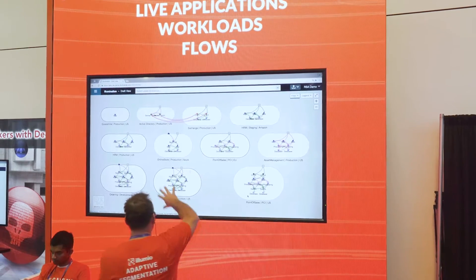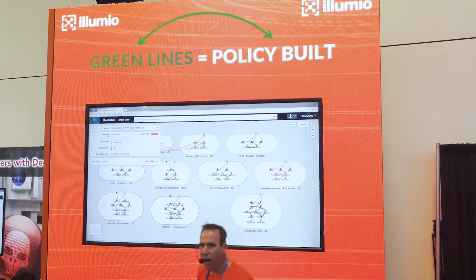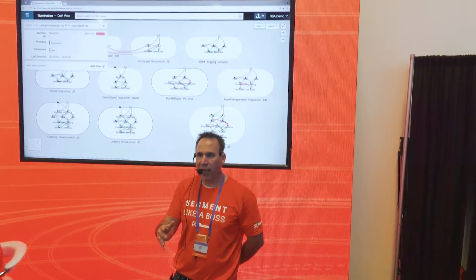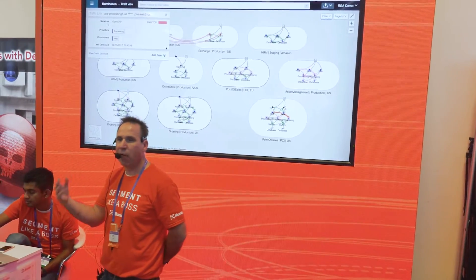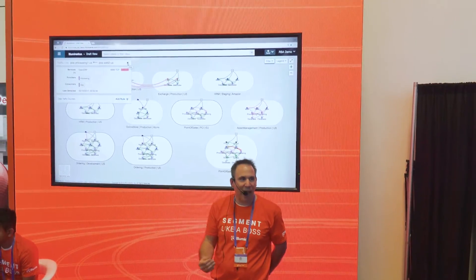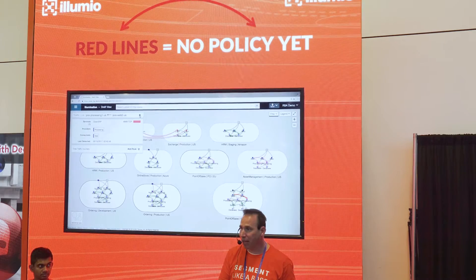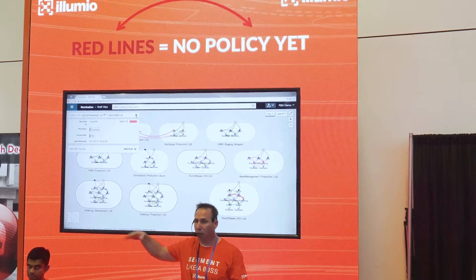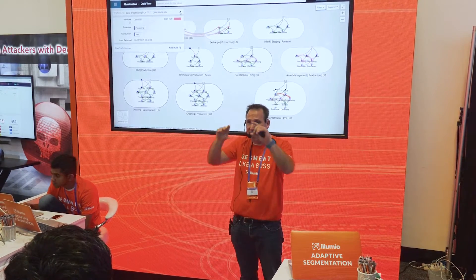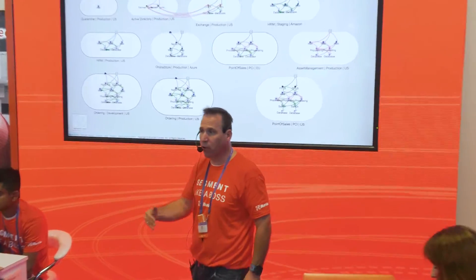You'll notice there are arrows indicating flows we've detected between individual workloads. There are red lines and green lines. A green line means we detected traffic between workloads and you've written a policy that would allow it. A red line means we detected traffic between workloads and you haven't yet written a policy that would allow it. In this Illumination mode, we allow you to incrementally build and test your policies on a workload-by-workload, application-by-application basis. One application could be in build mode where we write every ACL, but the last rule is permit any log alert, so you can build and test segmentation policies without breaking the actual application.